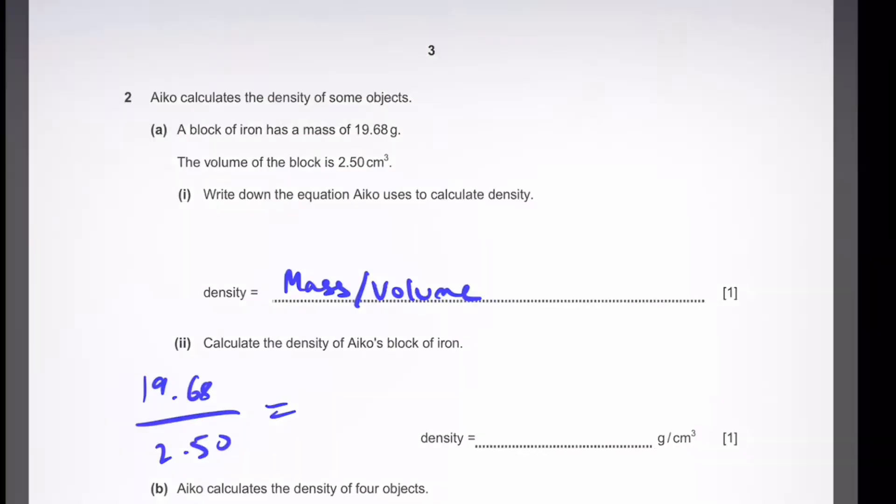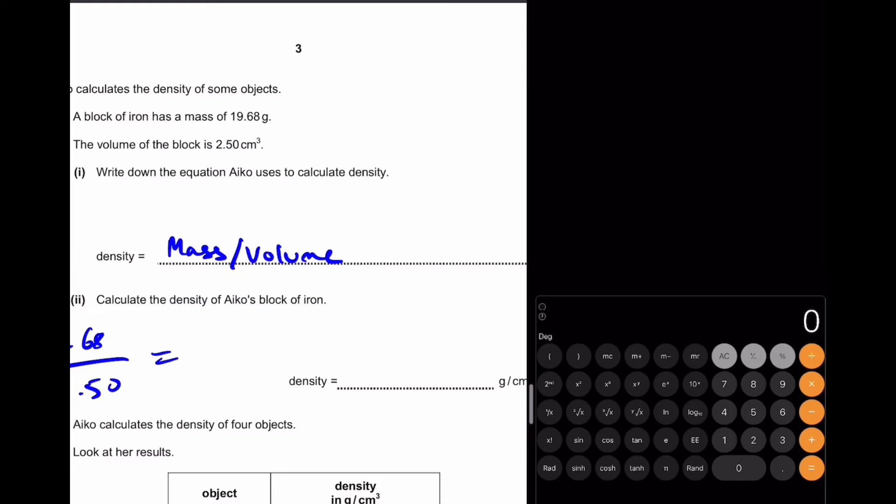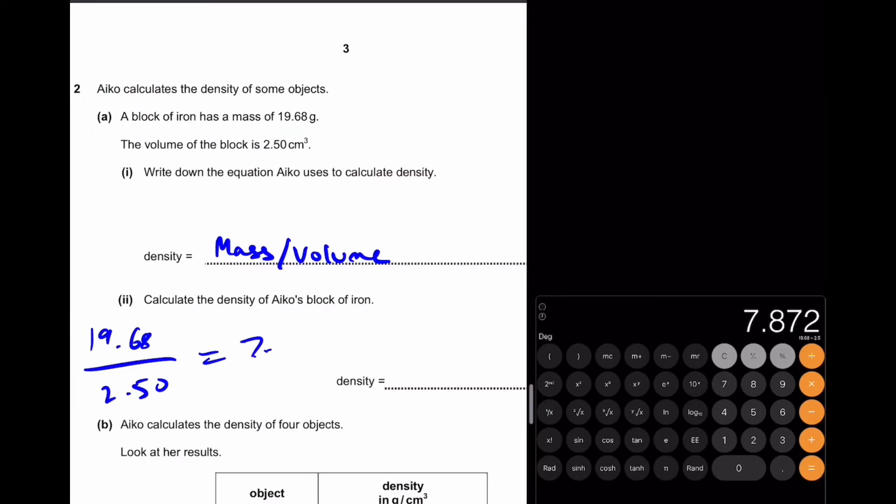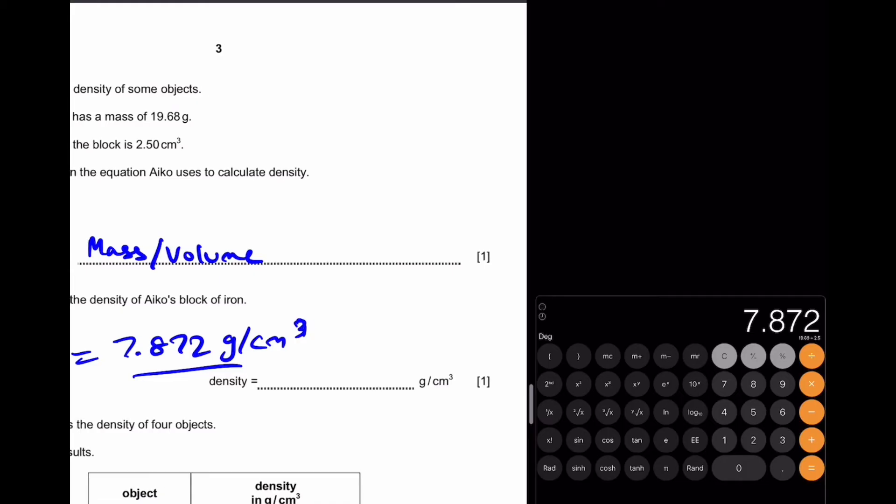Part 2: Calculate the density of Ico's block of iron. Well, the density is simply mass by volume, which is 19.68 divided by 2.50. Let's get our calculator out. 19.68 divided by 2.5 is 7.872 grams per centimeter cubed. So that's our answer.